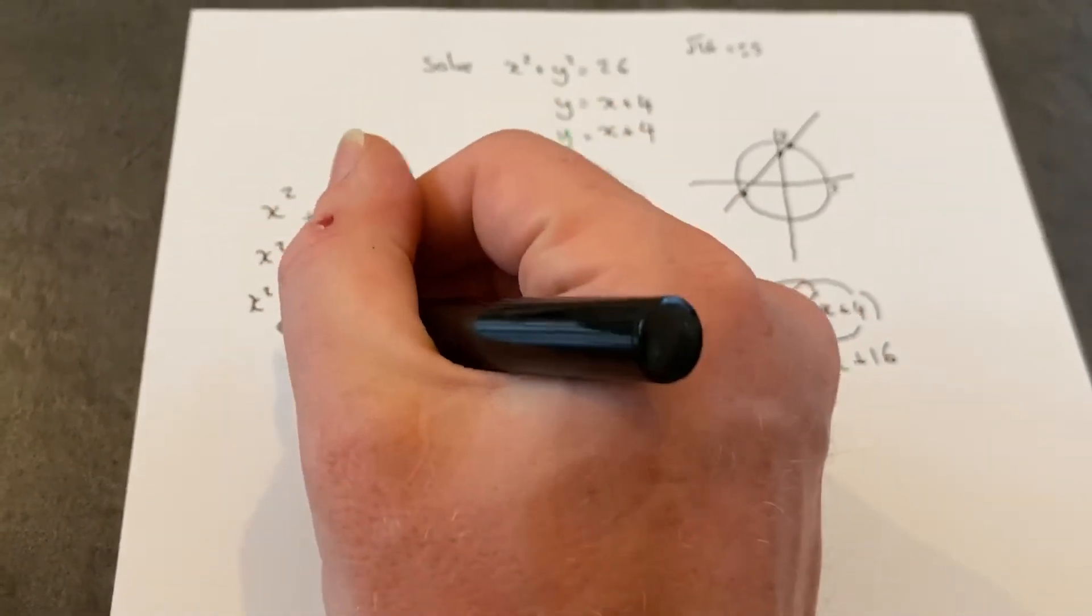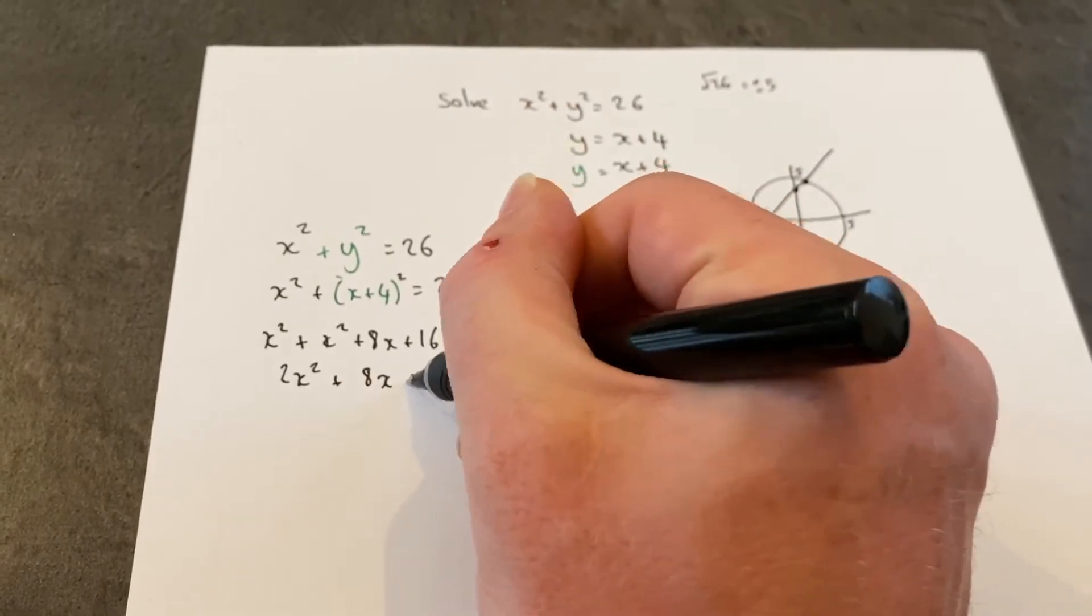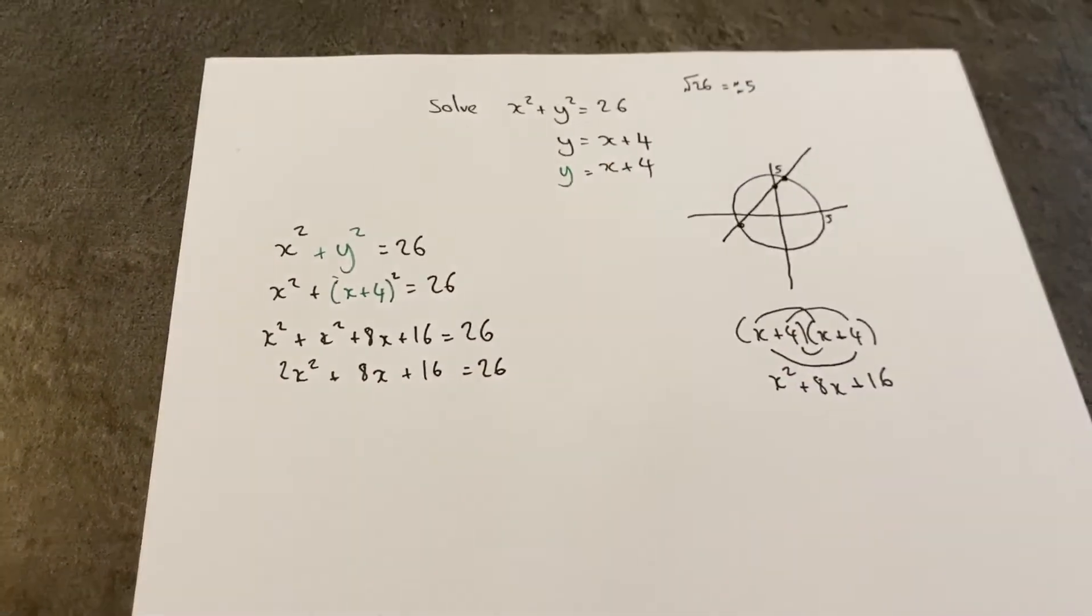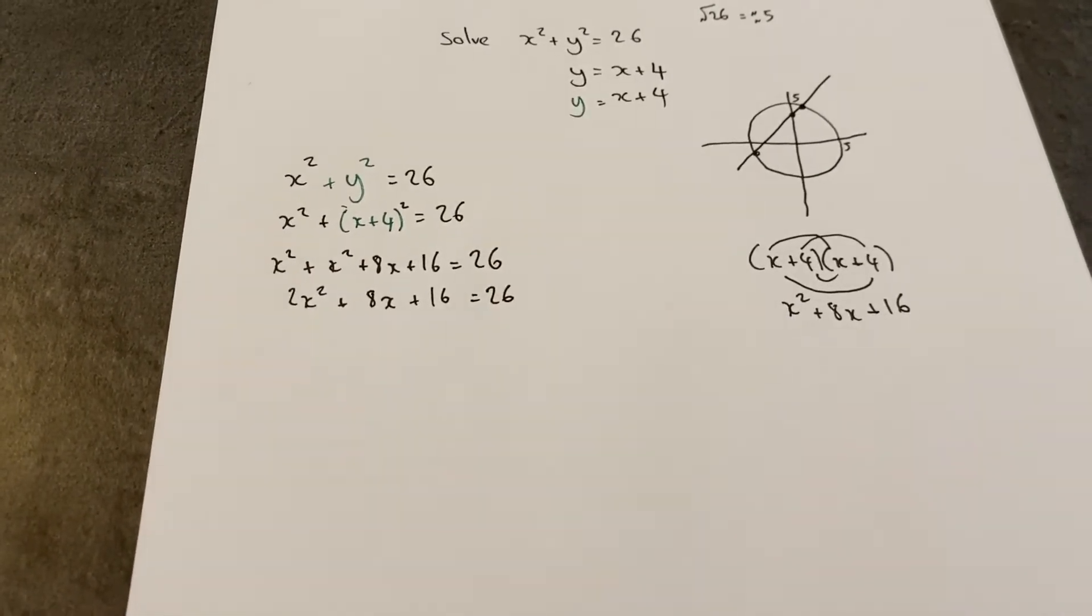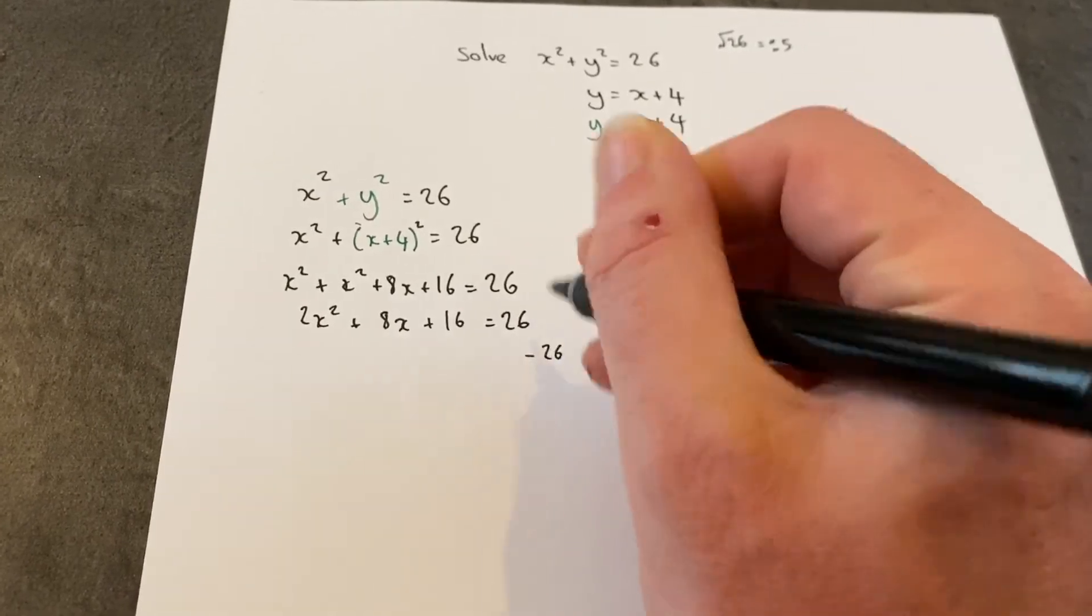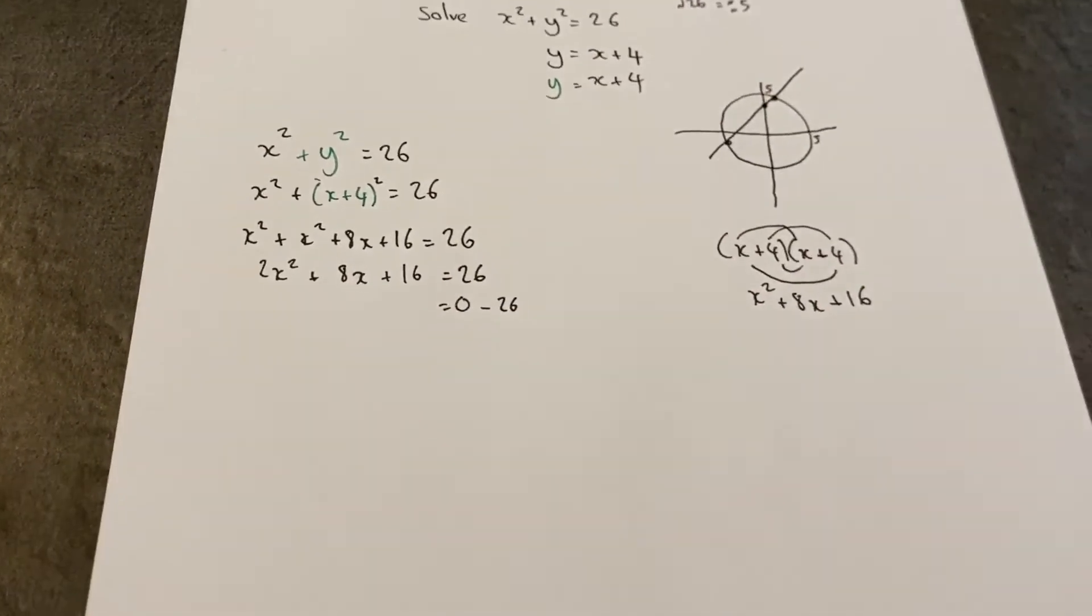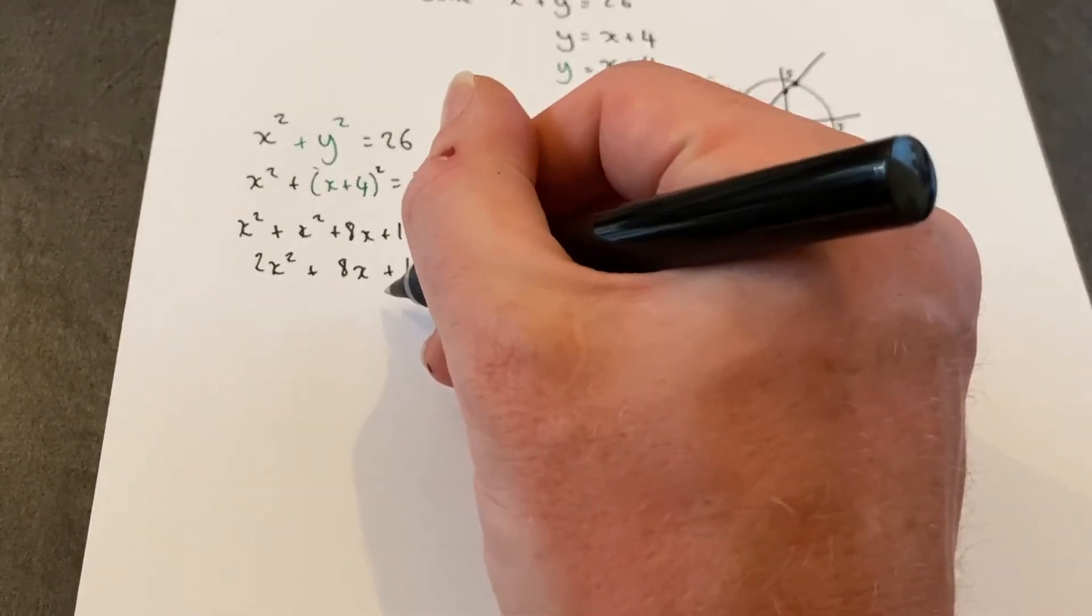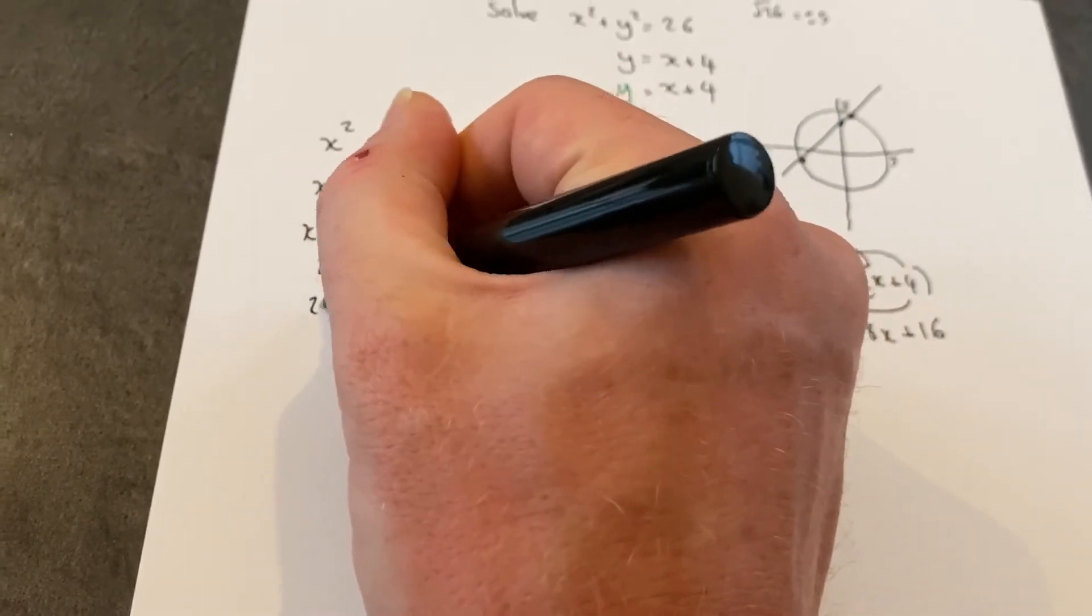There are two x squared terms, there's an 8x, there's a 16, and this must equal 26. To solve an x squared equation, it needs to equal 0. If I take away 26 from both sides, this becomes 0. 16 take 26 is negative 10, there's an 8x and a 2x squared.